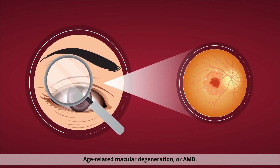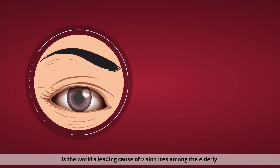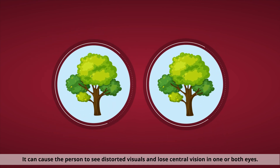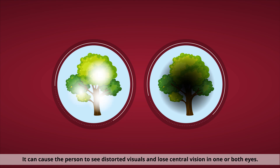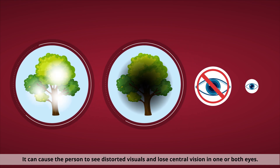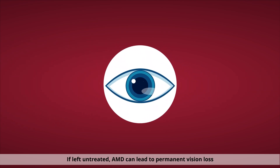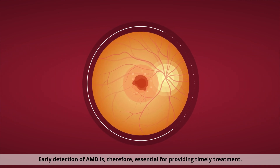Age-related macular degeneration, or AMD, is the world's leading cause of vision loss among the elderly. It can cause the person to see distorted visuals and lose central vision in one or both eyes. If left untreated, AMD can lead to permanent vision loss and irreversible damage to the photoreceptors in the retina. Early detection of AMD is therefore essential.